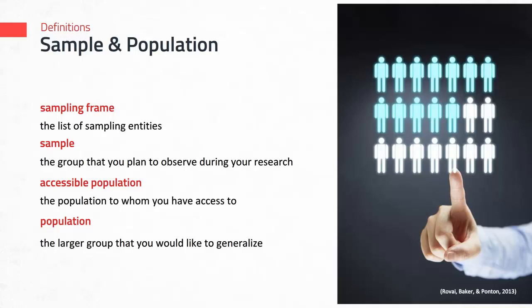Let's say Samantha is interested in the population of online graduate students. Since it's not possible to study the entire population of online graduate students internationally or even in the United States, she has to consider who is accessible to her. Her accessible population will probably be a group of online graduate students at the university where she works. Her sampling frame will be the list of students she plans to contact to participate in her study, and her sample are those online graduate students who actually participate.